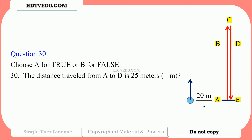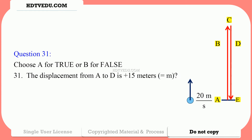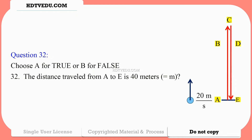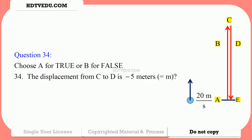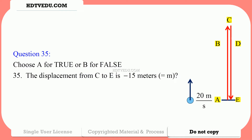Question number 30: The distance traveled from A to D is 25 meters. Mark A for true, B for false. Question 31: The displacement from A to D is positive 15 meters. Mark A for true, B for false. Question 32: The distance traveled from A to E is 40 meters. Mark A for true, B for false. Question number 33: The displacement from A to E is 0 meters. Question number 34: The displacement from C to D is negative 5 meters. Question number 35: The displacement from C to E is negative 15 meters.